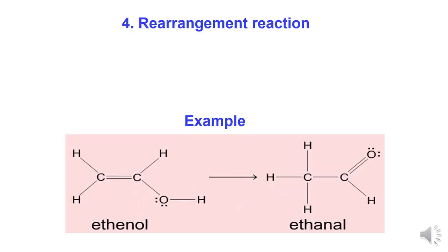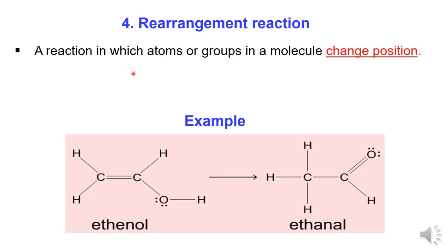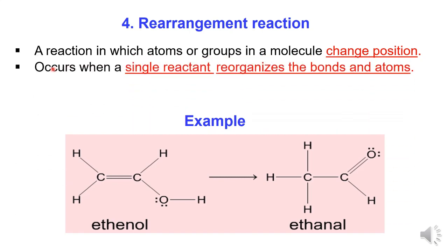4. Rearrangement reaction is a reaction in which atoms or groups in a molecule change position. It occurs when a molecule rearranges its bonds and atoms. Example: From ethene, the position of the double bond and atoms rearranges to form ethane.